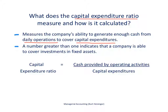We find the capital expenditure ratio by taking cash provided by operating activities — again from the top of the statement of cash flows — and dividing by capital expenditures, which are investments in fixed assets. The capital expenditure information generally comes from the investing activity section of the statement of cash flows, showing exactly how much cash companies have spent on their long-term assets.